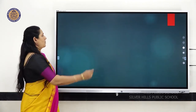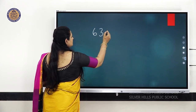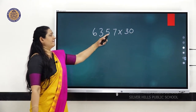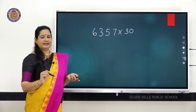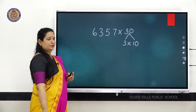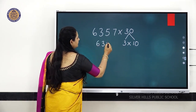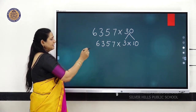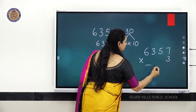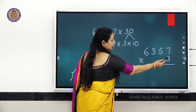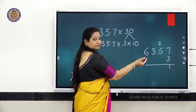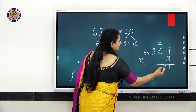Let's do one example. 6,357 multiplied by 30. Since 30 is a multiple of 10, you know that 30 means 3 into 10. First multiply 6,357 multiplied by 3. Multiply 3 with 7 — 3 sevens are 21, write 1, carry over 2. Then multiply 3 with 5 — 3 fives are 15, plus 2 is 17, write 7, carry over 1.